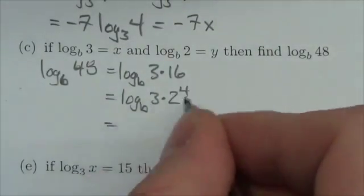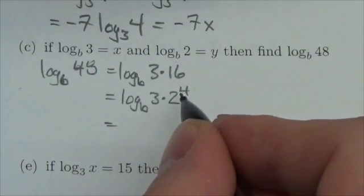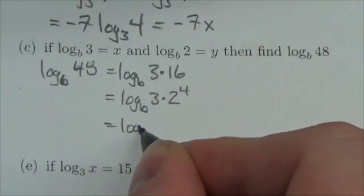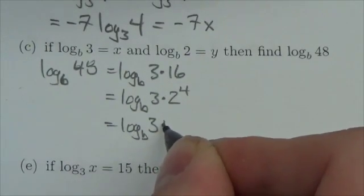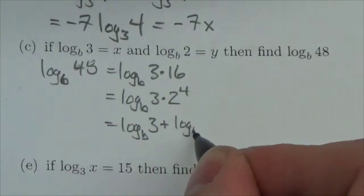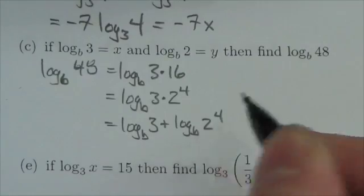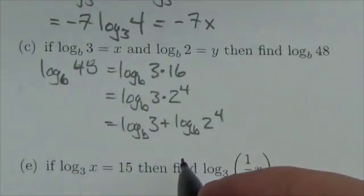48 and plug it in there in this form: 3 times 2 to the 4. Here I use my log laws to make this the log base b of 3 plus the log base b of 2 to the 4.